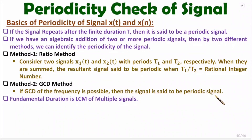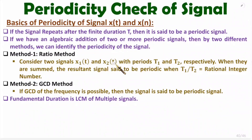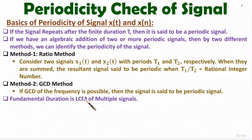If the given signal is periodic, then the fundamental duration can be identified by calculating the LCM. So if we have two or more signals with durations T1, T2, T3, and so on, we need to identify the LCM of those durations T1, T2, T3, and that will be the fundamental duration.